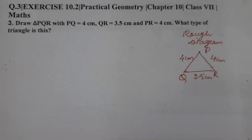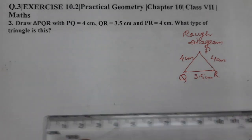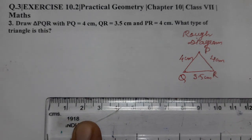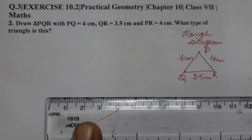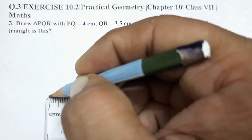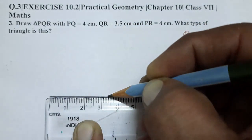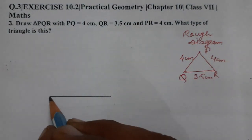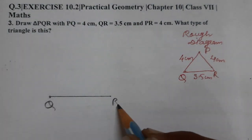Let's work out this triangle. First of all we'll make QR. QR is given to us 3.5 centimeter. We are making 3.5 centimeter line segment. This is 3.5. We have taken QR. Name it QR.